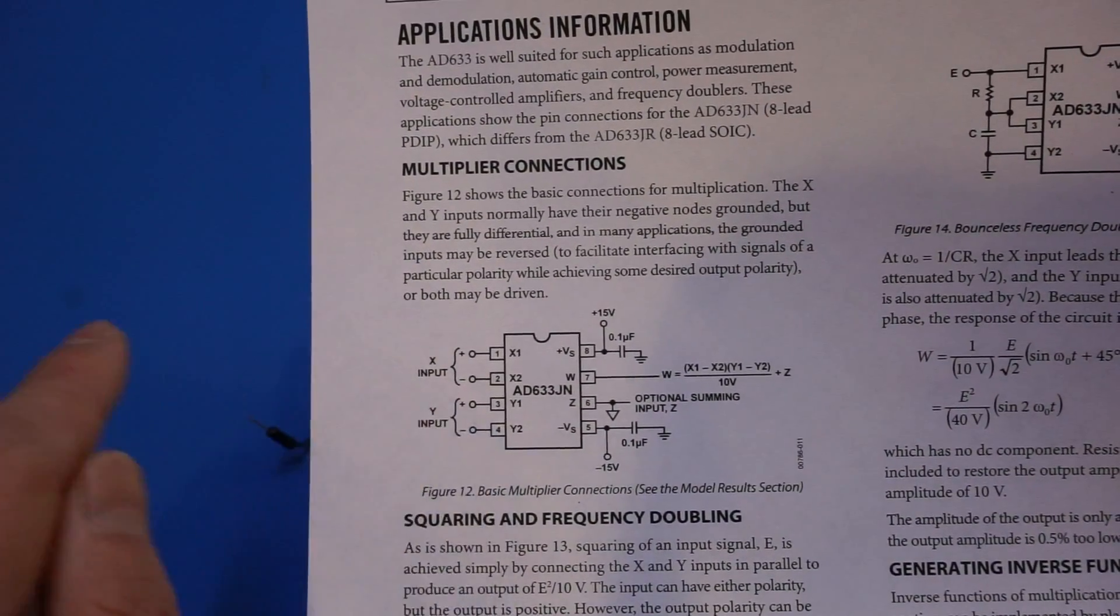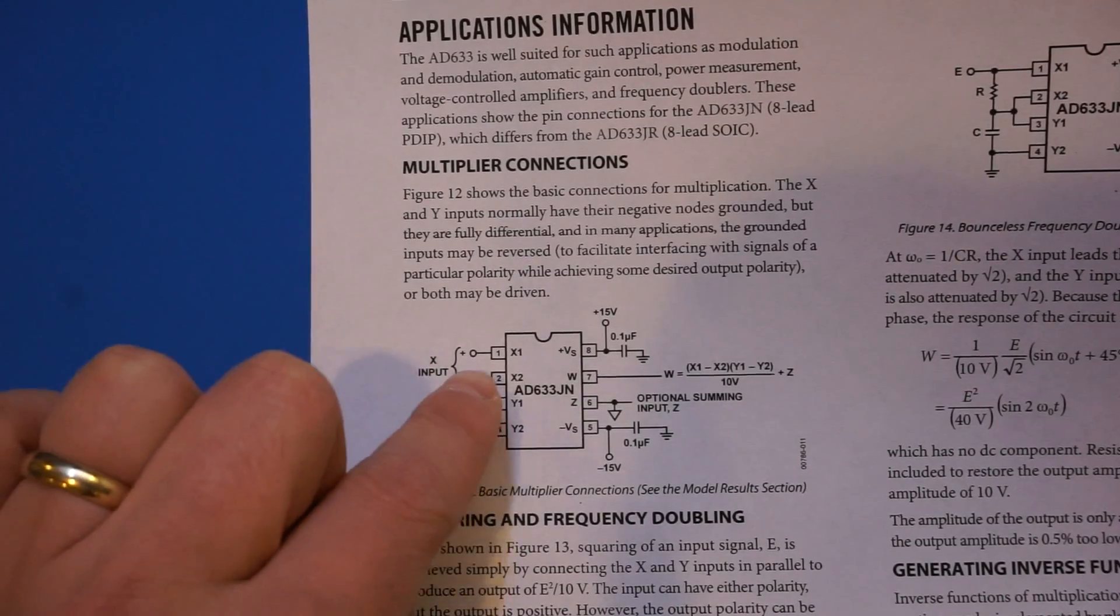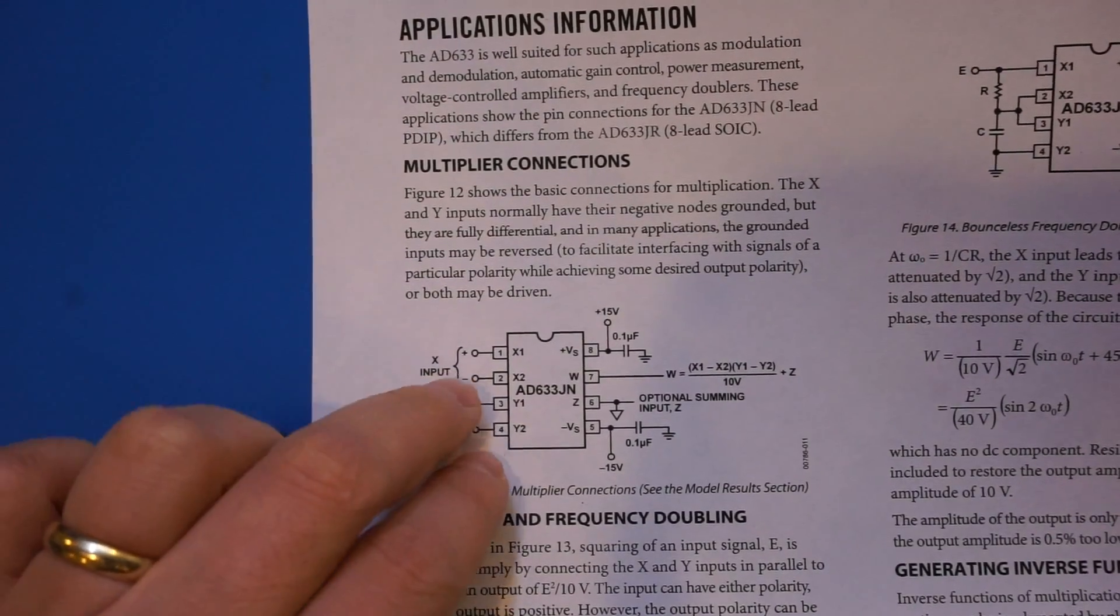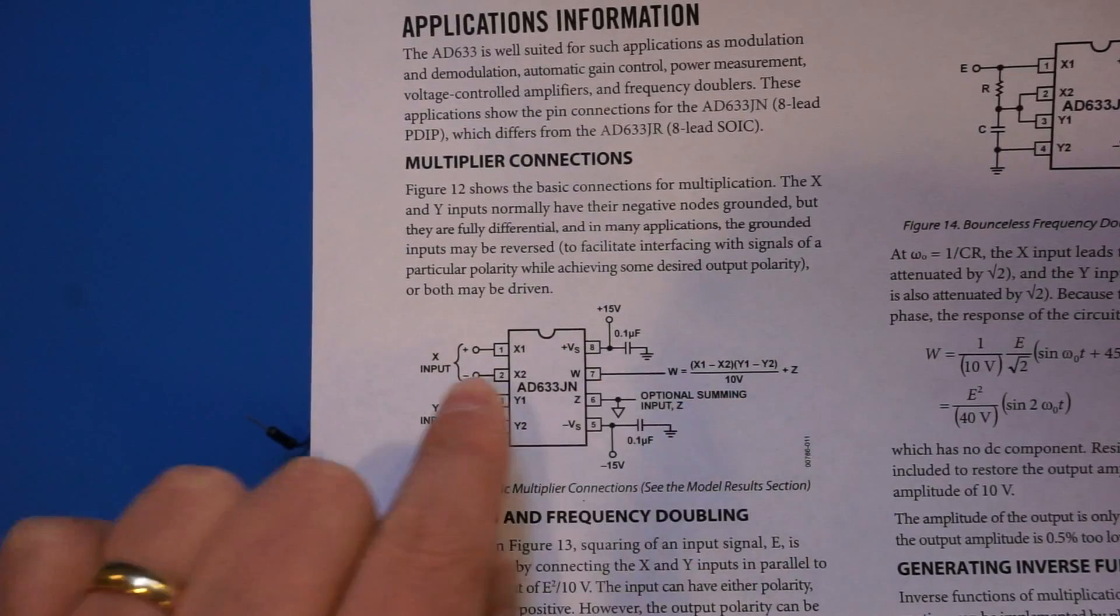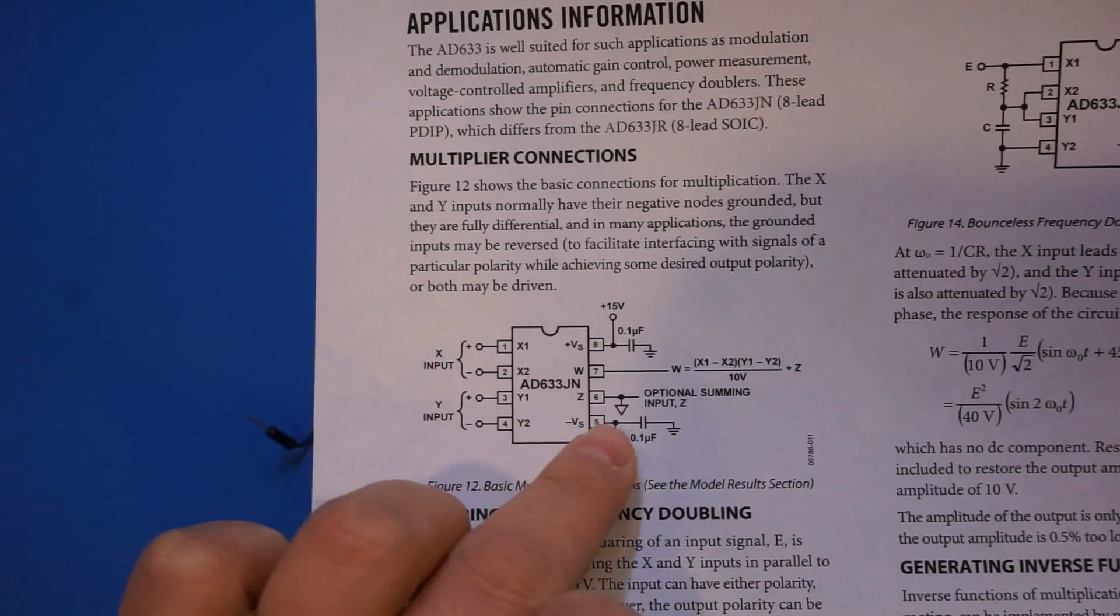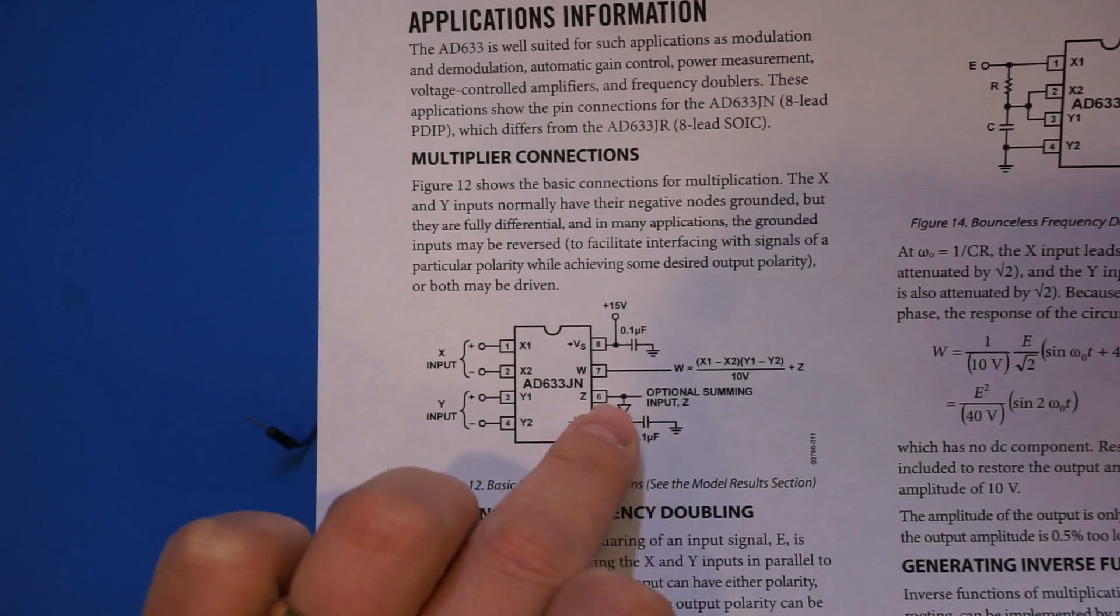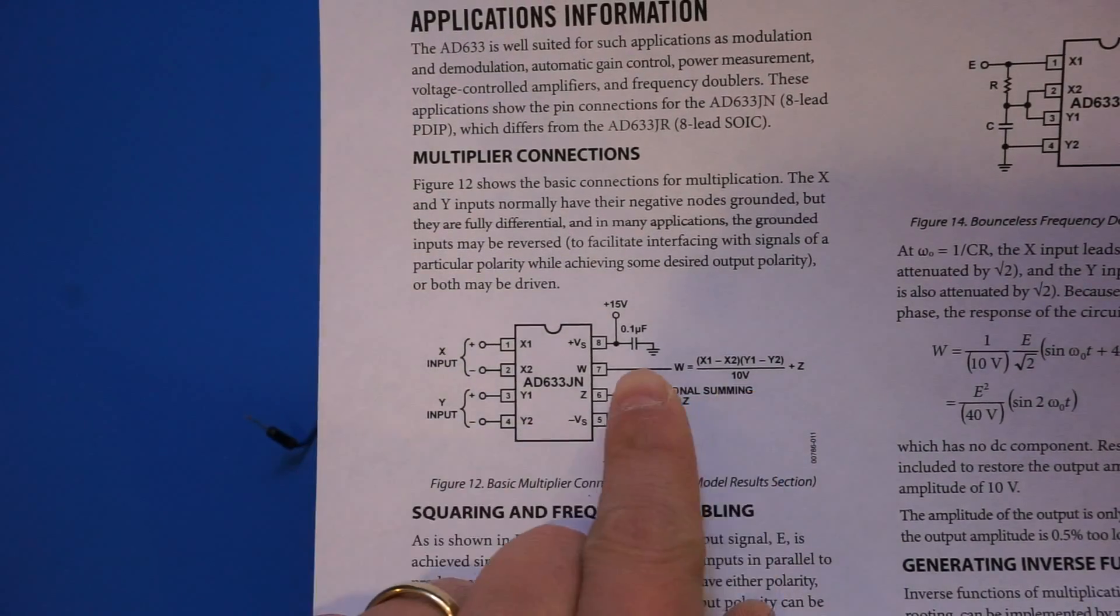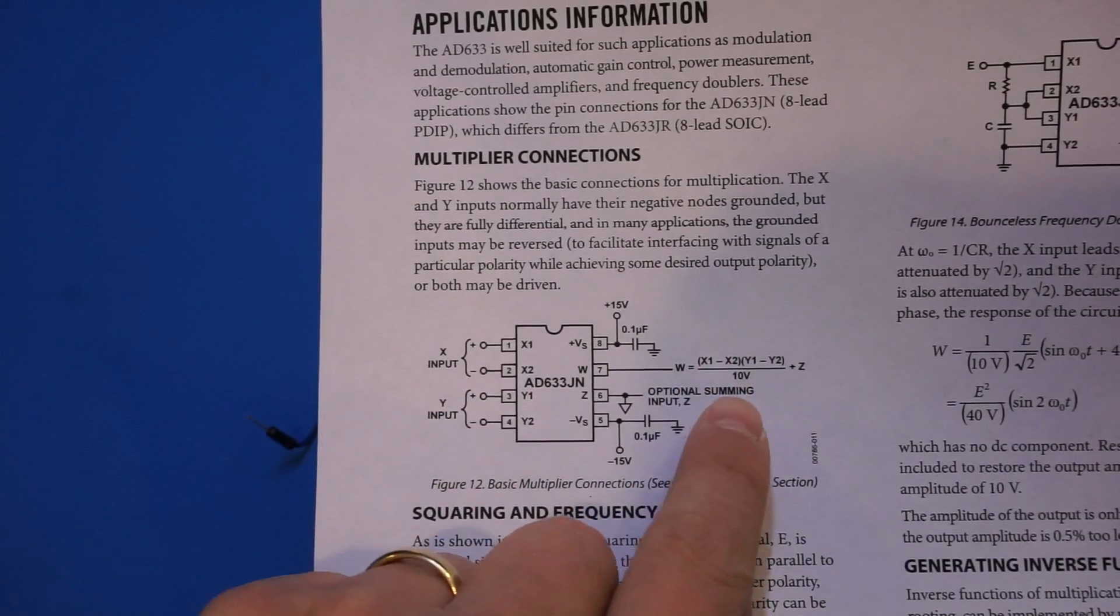We can put it into a circuit like this. And if we tie the pin 2 and pin 4 to the ground, then the output from the pin 7 is basically the product of x and y over 10 plus z. And if we tie z to the ground, so this is a summing input to the ground, then what happened is the output should be the product of x and y over 10.